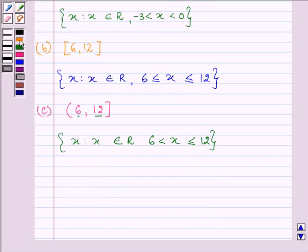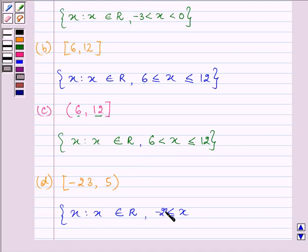And here if we have something like -23 has a closed interval where 5 is an open interval, we say here X such that X belongs to real numbers and X is greater than equal to -23 but less than 5. Here 5 is not included in this interval.